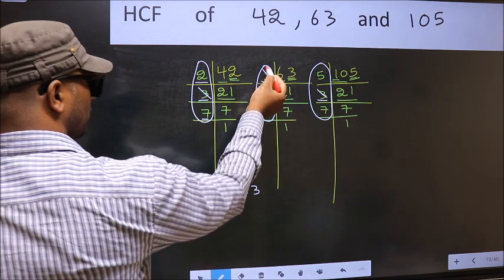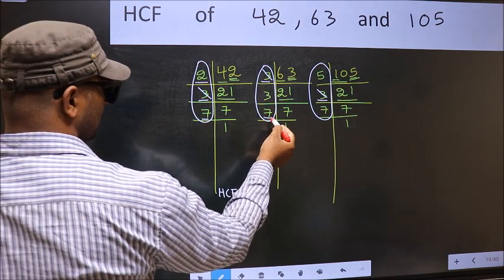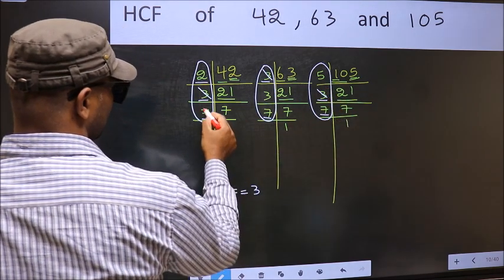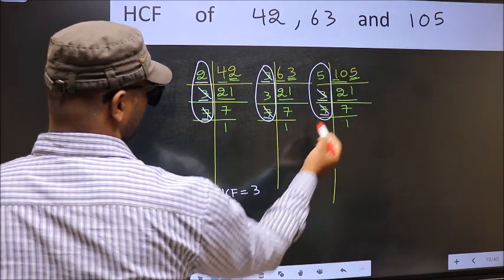Next number, 7. Do we have 7 here? Yes. Yes. Go to the next place. Do we have 7 here? Yes. So cut 7 right here.